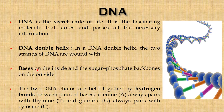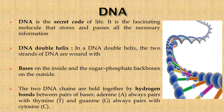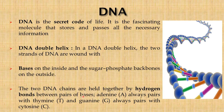The DNA double helix: the two strands of DNA are wound with bases on the inside and the sugar phosphate backbones on the outside, as shown in this figure. The two DNA chains are held together by hydrogen bonds between base pairs — adenine always pairs with thymine and guanine always pairs with cytosine.